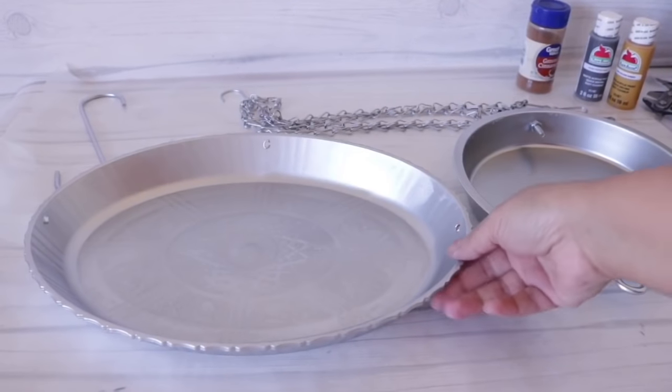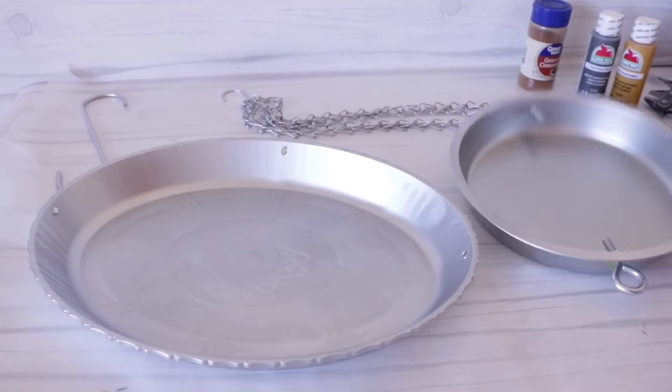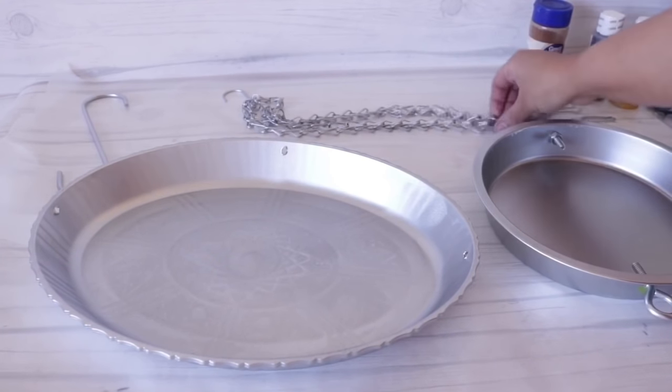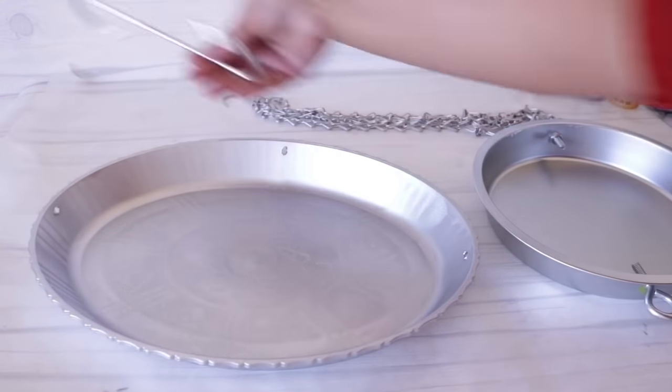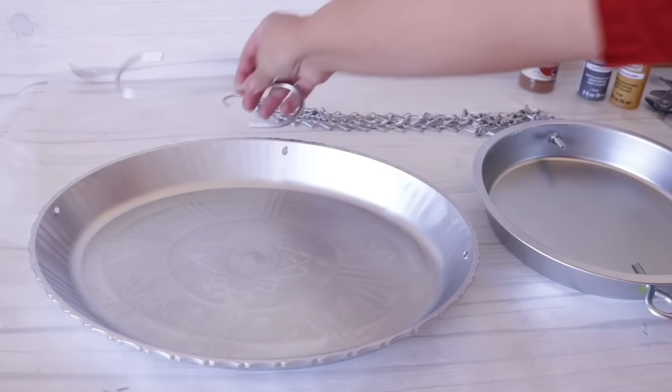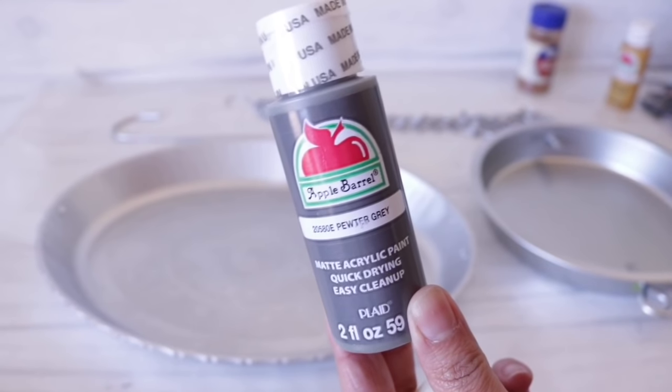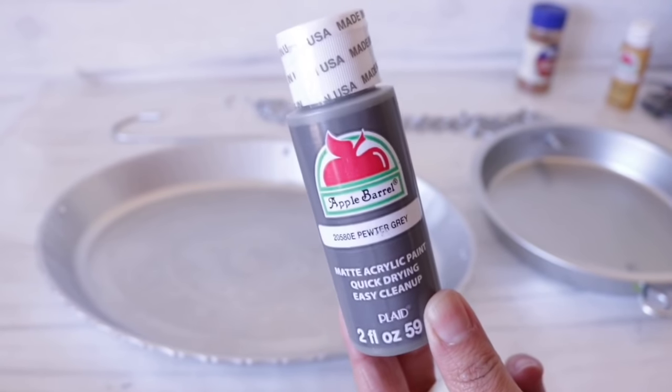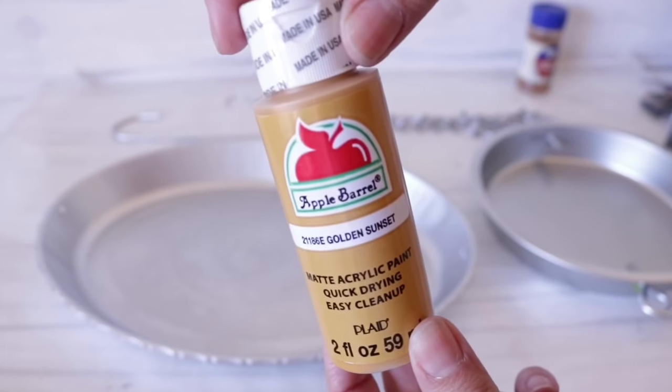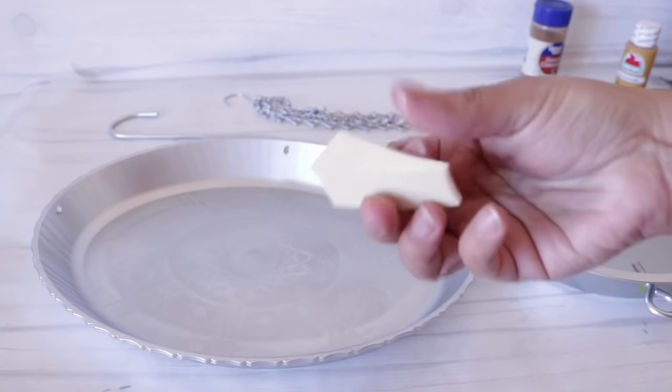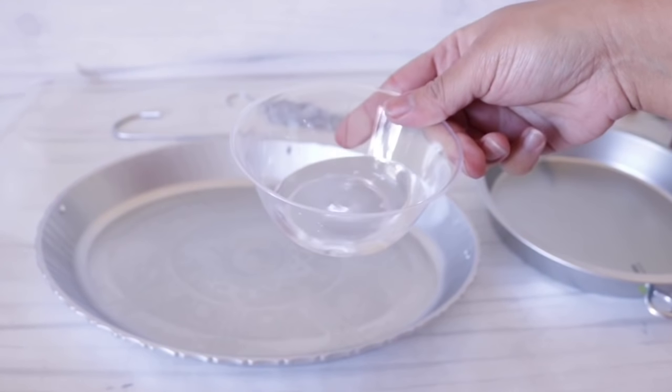Once everything was completely dry, I was left with my base, my top piece, my chain. And I forgot to show this earlier, but this is a plant hook that I purchased at Dollar Tree. This comes in a pack of two. I'm going to give everything some details by adding some Pewter Gray from Apple Barrel and some Golden Sunset. I'm using a makeup sponge, which I also purchased at Dollar Tree, and a little bit of water.